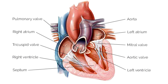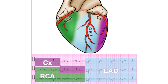You should be able to identify chambers, valves, and vessels from a diagram of the heart. For the three main coronary arteries — the right coronary, left anterior descending, and left circumflex — you should know the regions of the heart that each supplies blood to.